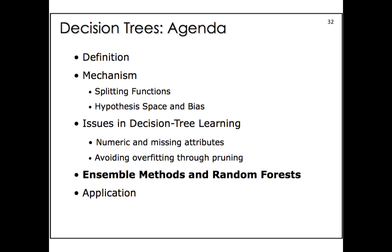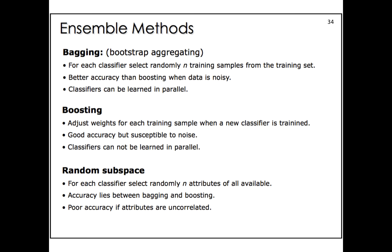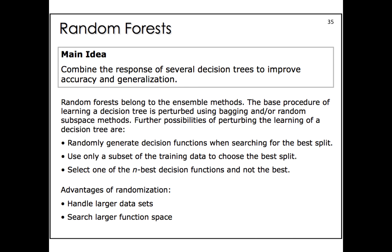The next section is about ensemble methods and random forests. Instead of building one tree for one dataset, you build a number of decision trees and combine their results to reach a final decision. The main benefit is to deal with overfitting and to handle larger datasets — you can build trees in parallel. However, it doesn't guarantee better performance; you have to run the method to see whether it improves accuracy for your specific case.